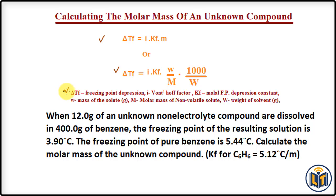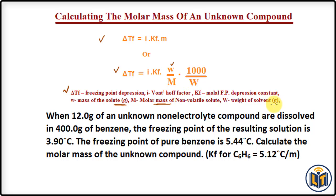Here you can see the labeling: Delta TF is freezing point depression, i is the van't Hoff factor, KF is the molar freezing point depression constant, small w is the mass of solute in grams, M is the molar mass of the non-volatile solute, and capital W is the mass of solvent in grams.